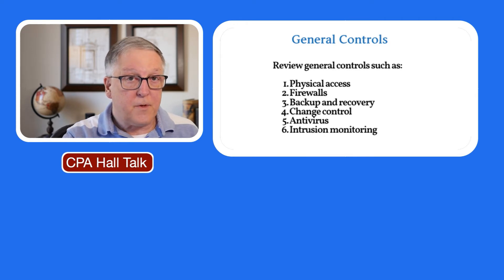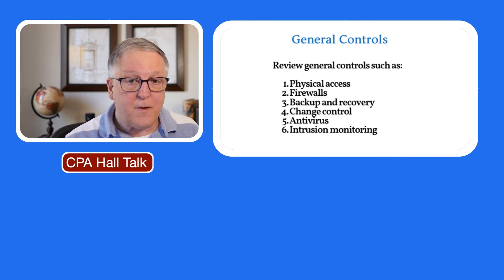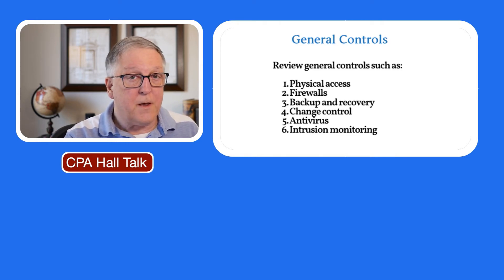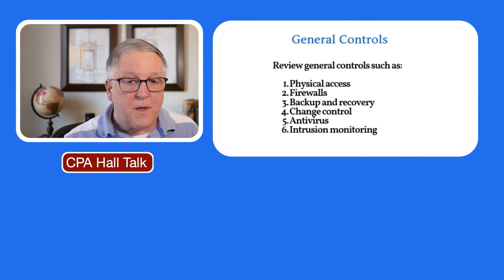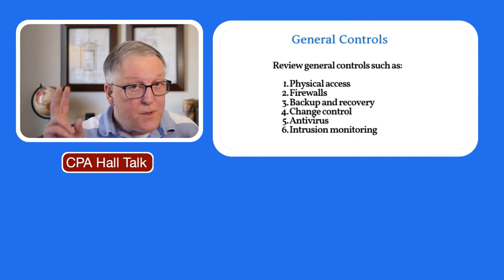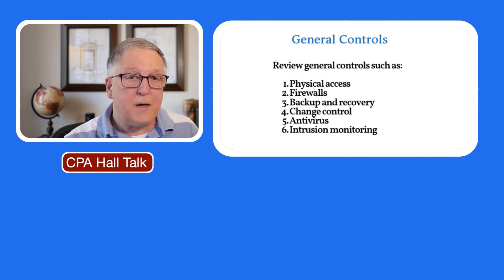In every audit, you need to gain an understanding of the general controls, which are broader than the activity-level controls. General controls include things such as physical access, firewalls, backup and recovery, change control, antivirus software, and intrusion monitoring. These may be general, but they can have a direct impact on the security of the information that you're auditing.